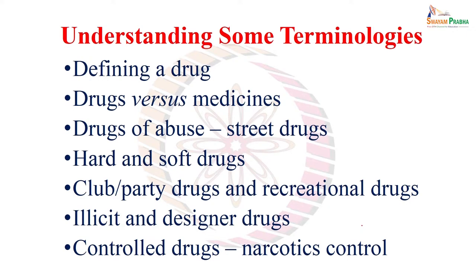Defining a drug of abuse: these are drugs used for non-medical purposes, drugs that have the potential to cause harm not necessarily only to the individual but also to others in society — these are called drugs of abuse. Some people may also call them street drugs, as if the drugs used for medical purposes are used in hospitals and clinics by doctors and nurses, while drugs not meant for medical purposes are outside these healthcare institutions, used in the street.